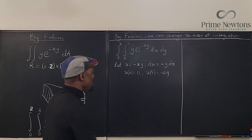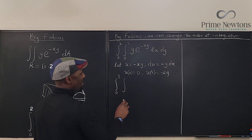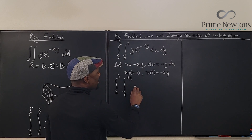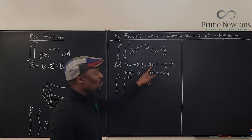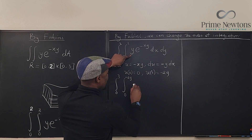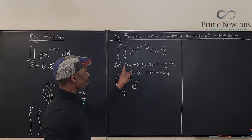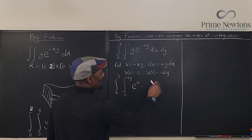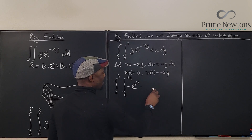When we rewrite the integral, the outer integral is still from 0 to 3, but the inner integral now goes from 0 to negative 2y. Since y dx is du, we replace y dx with du, leaving just e to the u. There's a negative sign coming from the substitution, so we have the integral of negative e to the u du.